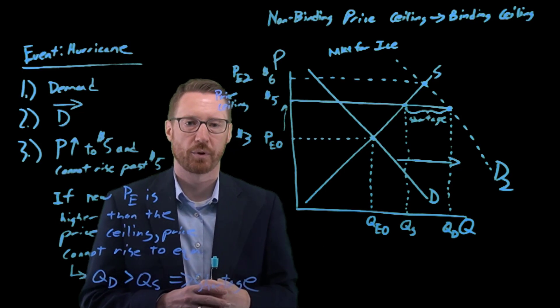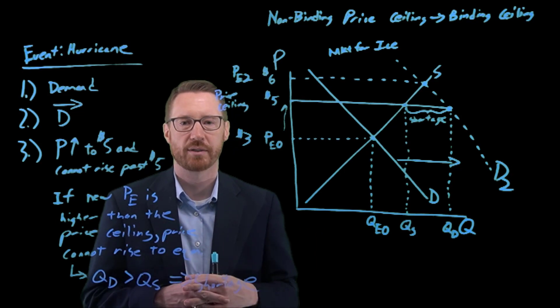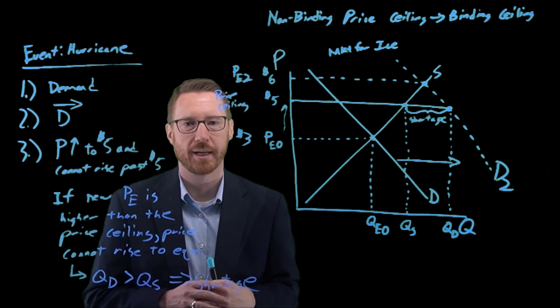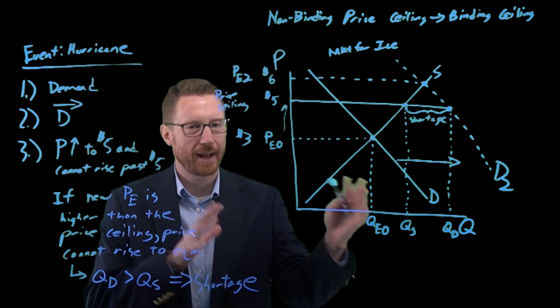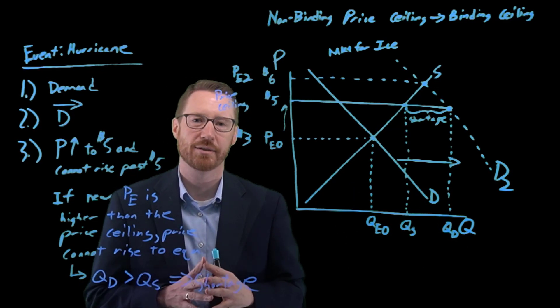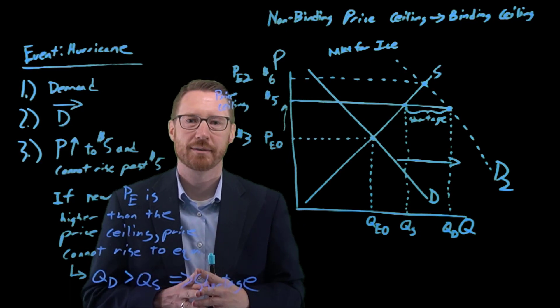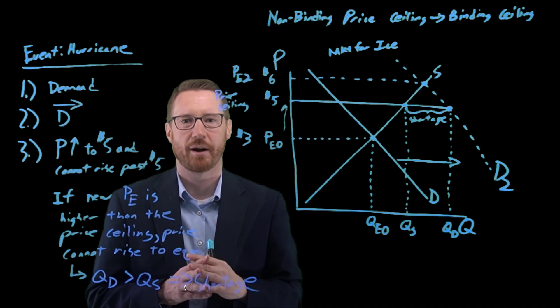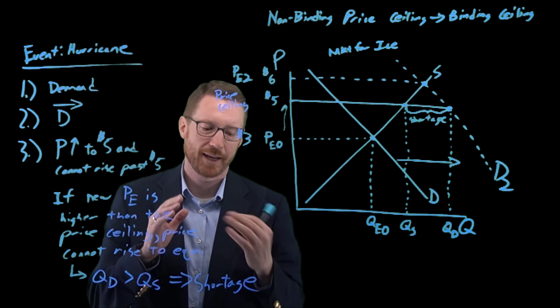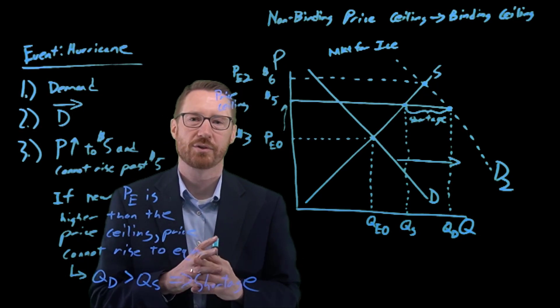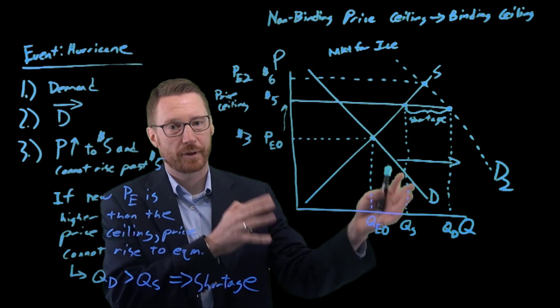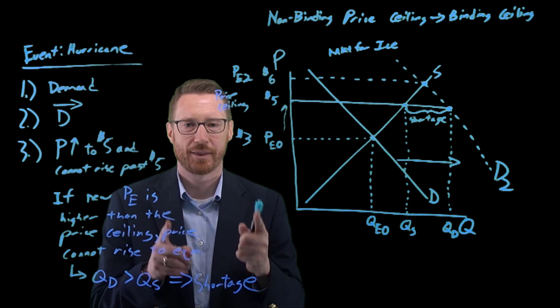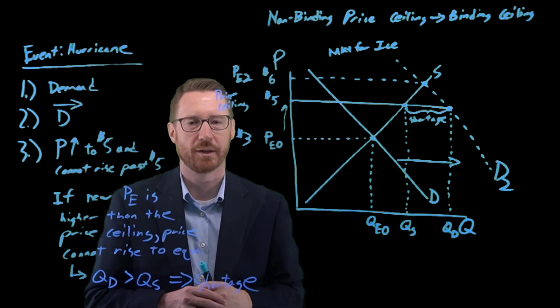Well-intentioned programs designed to keep prices from rising have the unintended consequence that they may keep markets from working and may keep us from allocating our scarce resources to their highest and best use. Economics is a story of trade-offs. Policies like these leave us with a trade-off. Do we want to keep prices from rising and end up with shortages, or do we allow prices to rise and have more of the good like ice, but now it's more expensive? It's a tough decision. That's why this is fun to debate. Thank you, and we'll see you next time.